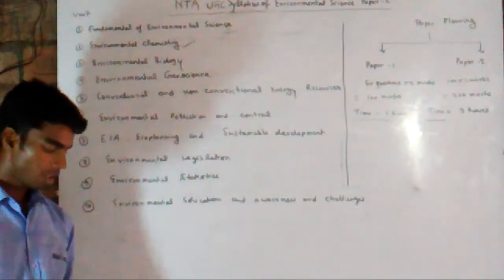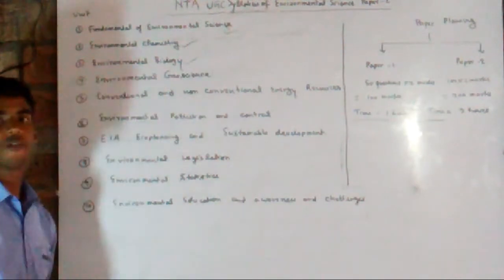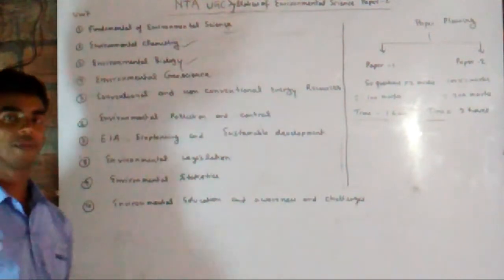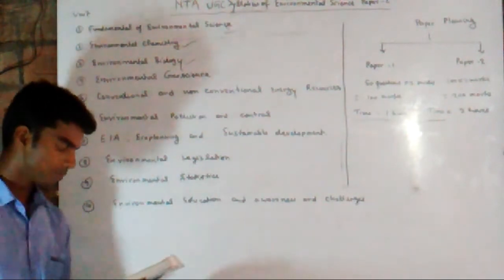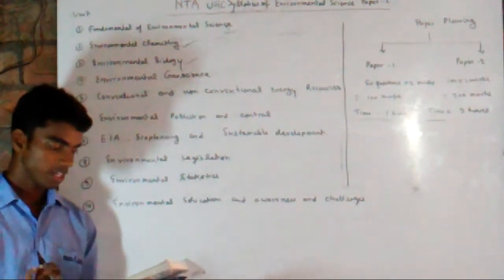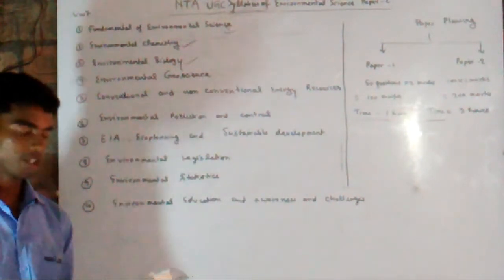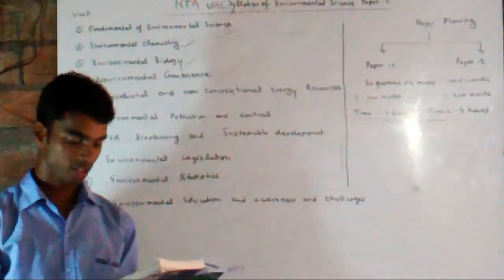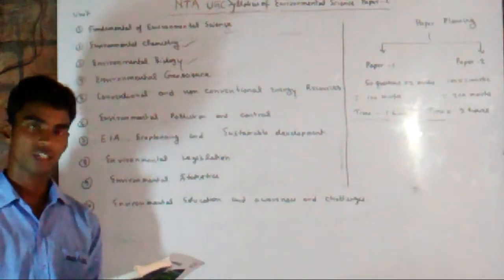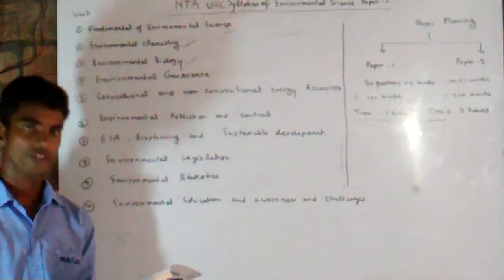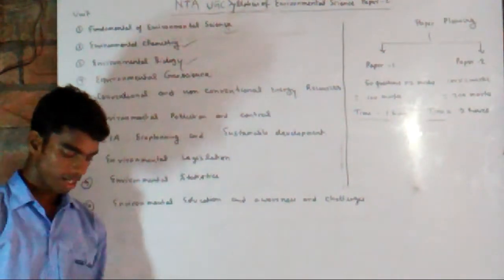Now we shall discuss the third unit: environmental biology. In this unit you will discuss the definition, principles, and scope of ecology, as well as human ecology and human settlement, evolution, origin of life and species, ecosystem structure and function, biotic and abiotic components, and energy flow.